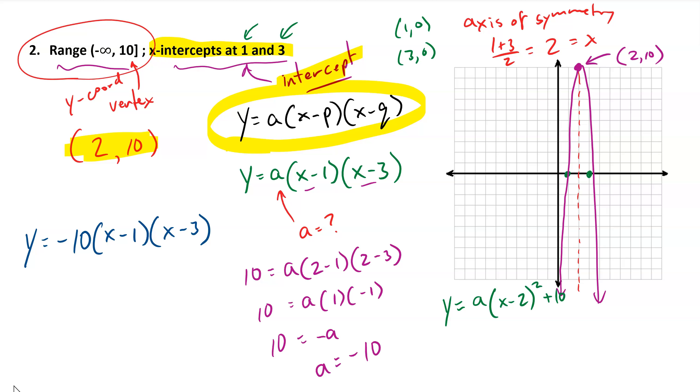And then we could use one of the x-intercepts to find the value for a. So taking the one on the left, I want to get a value of 0 if I plug in an x value of 1. And if I do that, I end up with the equation -10 equals a. And so we get the same a value, which is what we should do. The a value is always the same between the three forms.